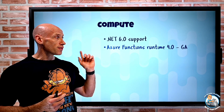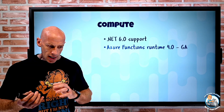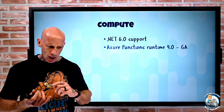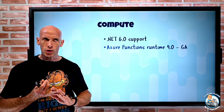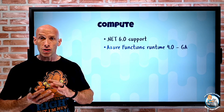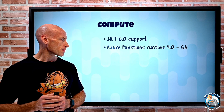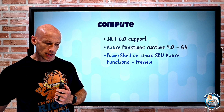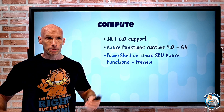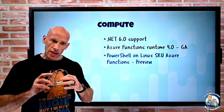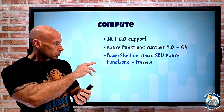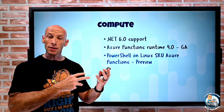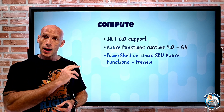Speaking of Azure Functions, the new Azure Functions runtime 4.0 is GA. This has .NET 6.0 support — both in-process and isolated process — but also Node.js 14, Python 3.7, 3.8, 3.9, Java 8 and 11, PowerShell 7, and a bunch of custom handlers. PowerShell on Linux SKU for Azure Functions is now supported. Since PowerShell is cross-platform — not just Windows but Linux as well — I can now have PowerShell running on Azure Functions using the Linux SKU, for the consumption and elastic premium function SKUs.